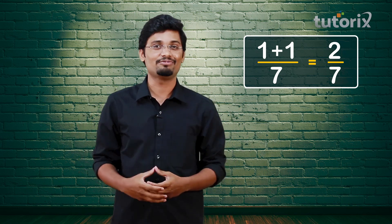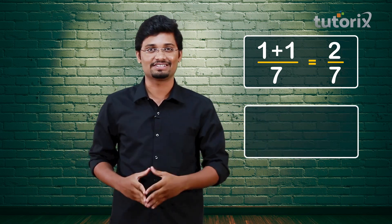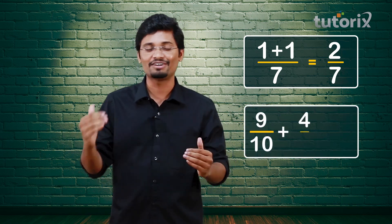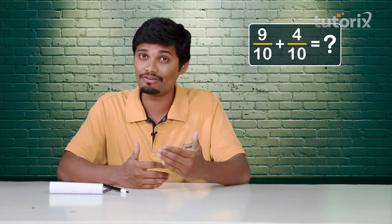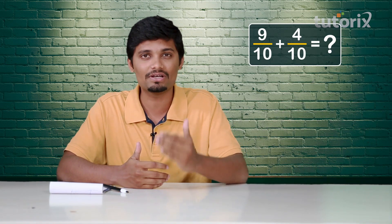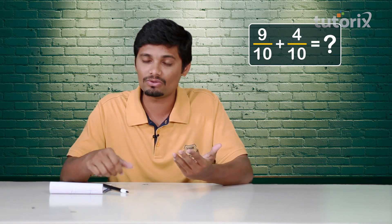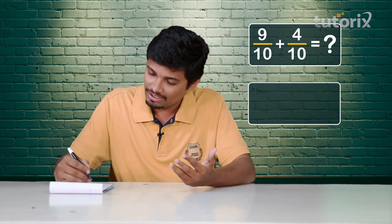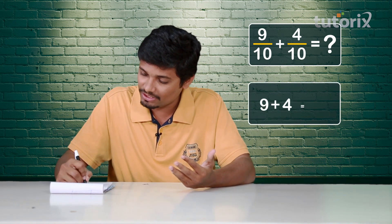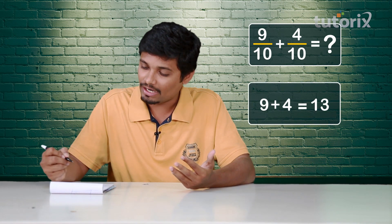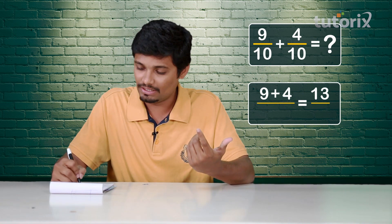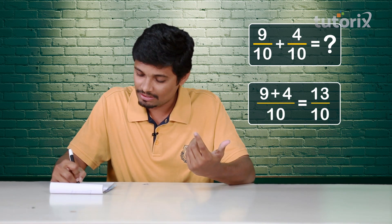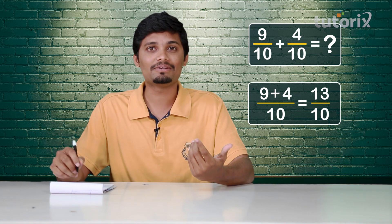Now, why don't you try yourself and add the fractions 9 by 10 and 4 by 10? Because they are like fractions, I should add the numerators 9 and 4 and copy the common denominator. So 9 plus 4 is 13, and I copy the common denominator which is 10, giving 13 by 10. This seems so easy!